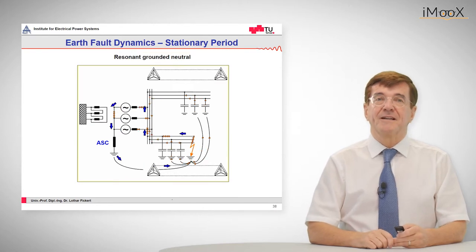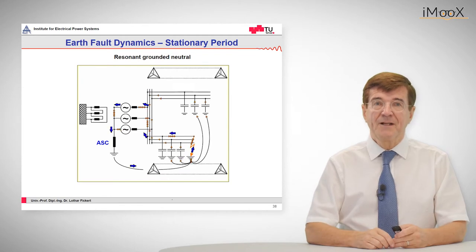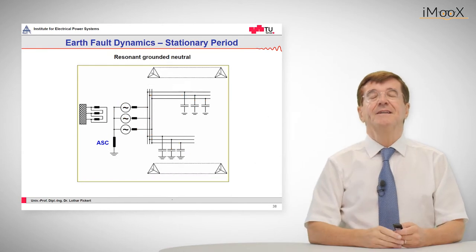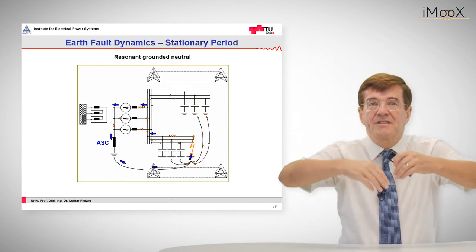If we have an arc suppression coil, sometimes called Peterson coil, we have more currents flowing. So, additionally to the red currents we had already, the capacitive currents, we have inductive current. And these two currents superimpose.